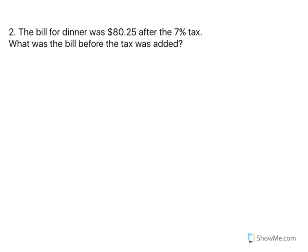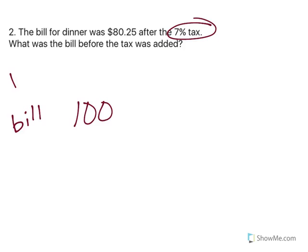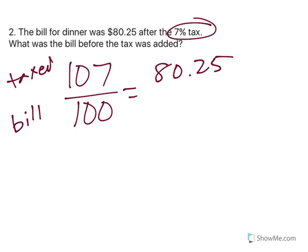Number two: the bill for dinner was $80.25 after tax. What was the bill before tax? Tax is always on top of your bill. So if I have a bill — this is my normal bill — then they add tax. So the tax makes it 107% of the price.